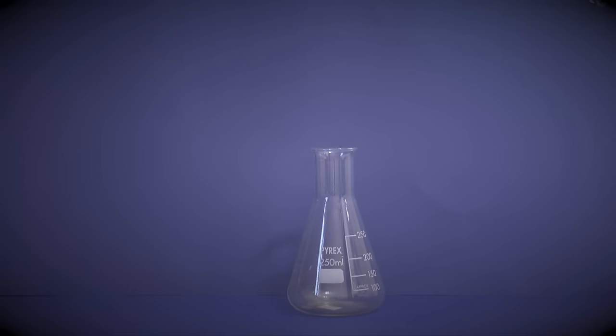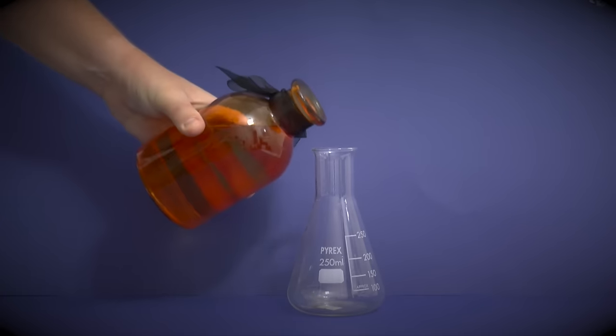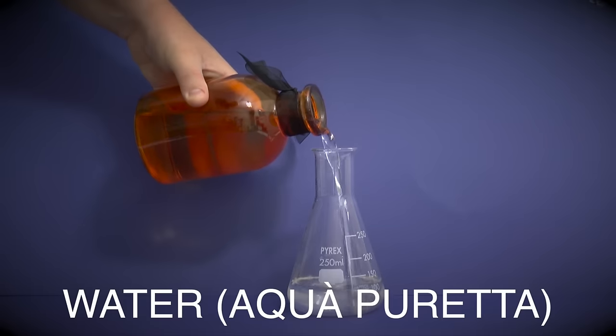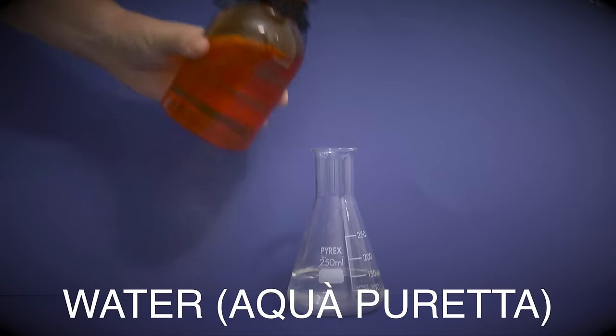It's best to mix the first part of the potion in a glass rather than your cauldron so you can ensure the magical reaction has taken place. First add in a small quantity of purified water, about 0.2 of a third is perfect.